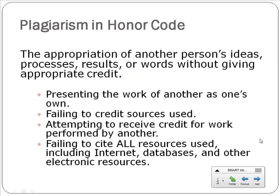Whenever we're talking about information sources and finding and using information sources, it's a good idea to keep in mind that you want to make sure that you use those resources in an appropriate way. I'd like to remind you of the definition of plagiarism in the honor code. Plagiarism has been defined as the appropriation of another person's ideas, processes, results, or words without giving appropriate credit. As you find different articles and books, make sure you always have enough information to write a proper citation. Remember, it's not just taking someone's exact words that requires you to cite — if you take someone else's ideas and put them in your own words, you still need to say where you got that information.